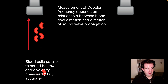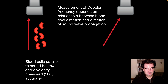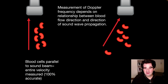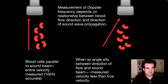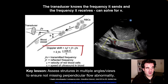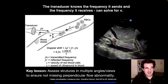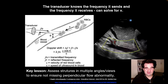When blood flow is parallel to the sound beam, you register 100% of that entire velocity. When it is anything less than parallel, you register less than 100% of that velocity. Here is the equation for Doppler shift, which we are often solving for V, or velocity. The cosine in that equation plays a really important role. If your cosine angle is 90 degrees — meaning your Doppler interrogation direction and vascular flow are perpendicular — then you register zero, which appears black. That is zero Doppler shift.